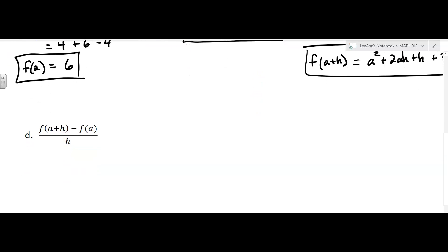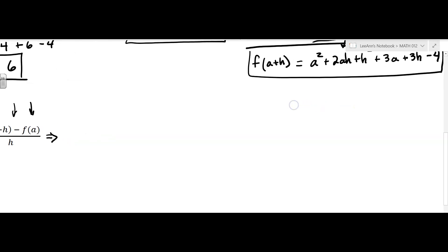Now, on part D, they want us to take f of a plus h and subtract f of a. And then they want us to divide the whole thing by h. This is actually called the difference quotient. And it's something they're going to start you with in calculus. But right now, we're just practicing with the functions. The good news is we already know what f of a plus h is, because we figured that out in part C. So I have a squared plus 2ah plus h plus 3a plus 3h minus 4.